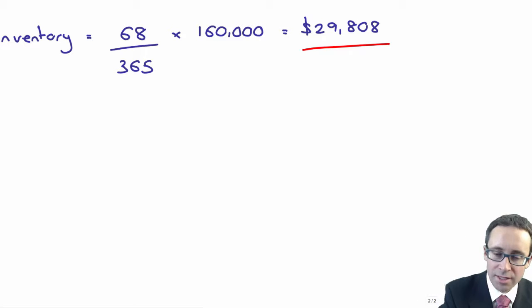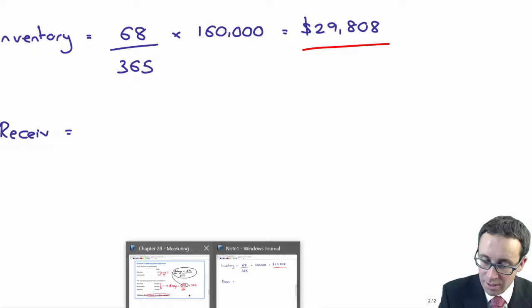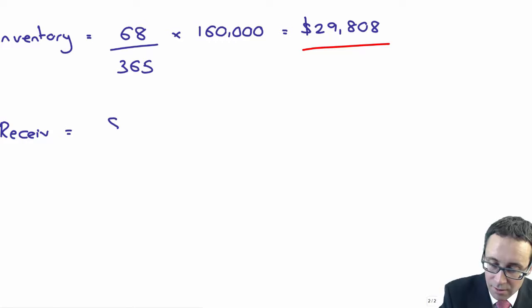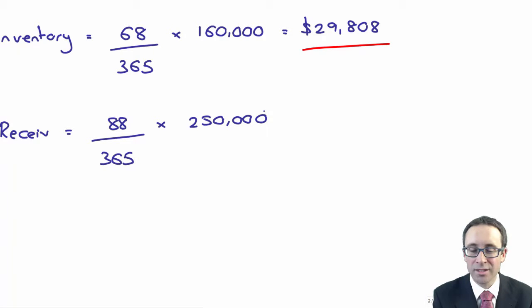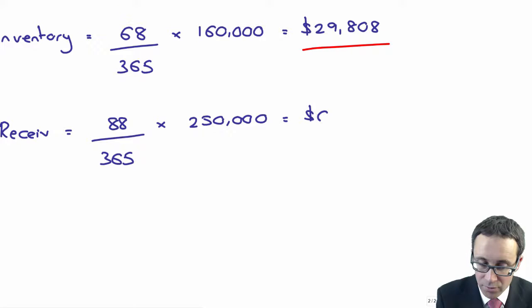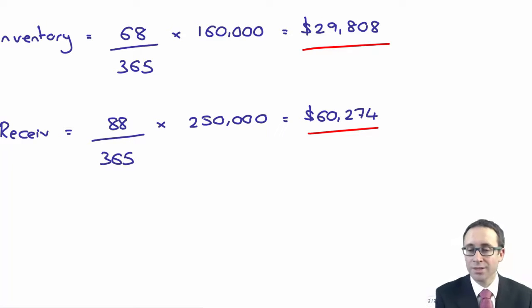If I then look at my receivables, the receivables is 88 days. So 88 divided by 365 multiplied by my sales - technically it should be credit sales but there's no distinction between cash and credit here - so my investment in receivables is 60,274. So every 88 days I would expect to receive $60,274.